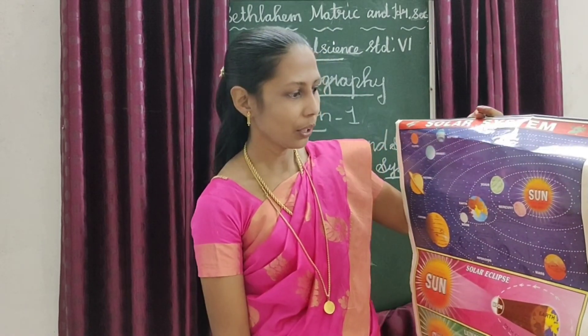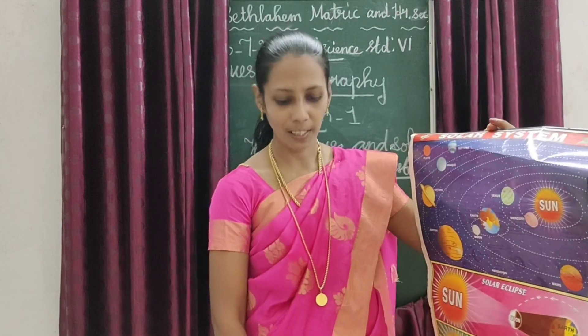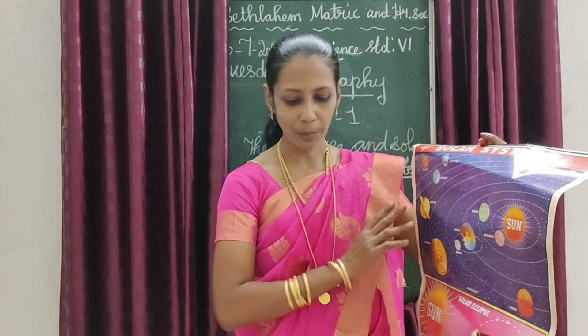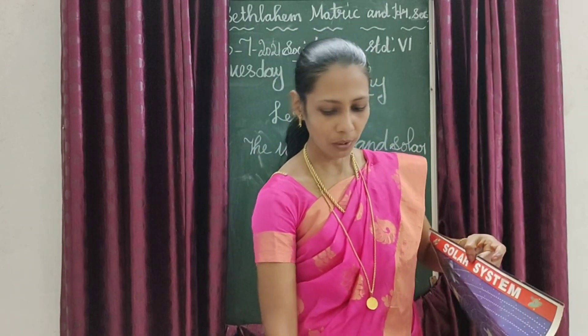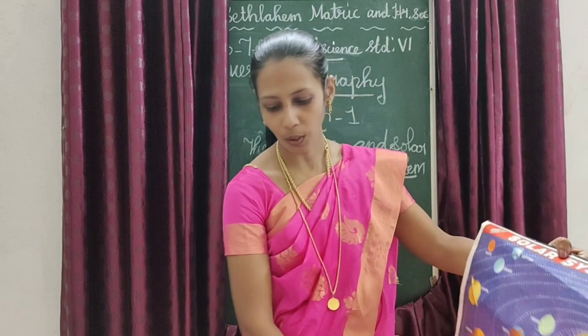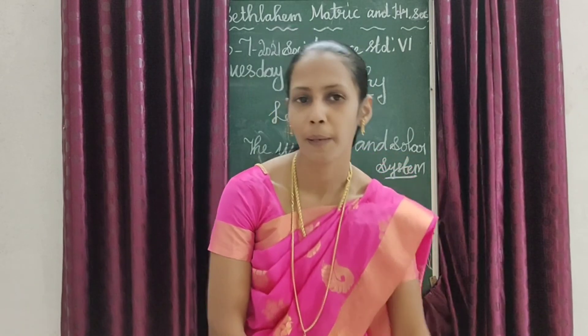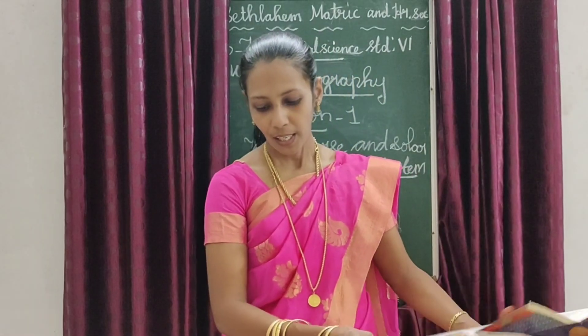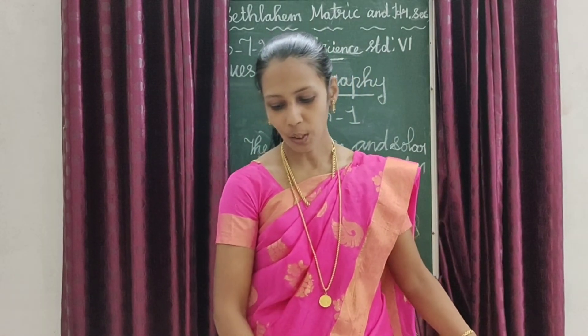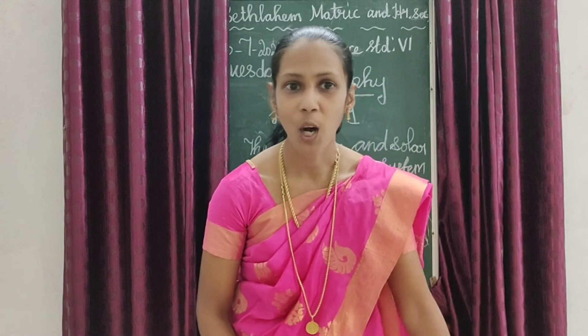The first four planets — Mercury, Venus, Earth, and Mars — are called inner or terrestrial planets. The remaining four — Jupiter, Saturn, Uranus, and Neptune — are outer planets, also called Jovian planets.